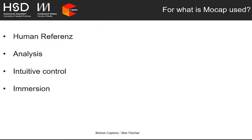Summarizing the use cases, the four big purposes of motion capture are: providing human references for animation, analyzing motion, enabling intuitive control, and achieving a higher sense of immersion inside an application.